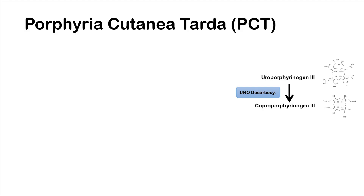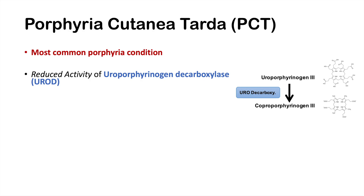Now that we've looked at the entire pathway and the various conditions associated with each of the enzymes, we're going to talk specifically about porphyria cutanea tarda. This is due to a deficiency in uroporphyrinogen decarboxylase, and it is the most common porphyria condition. It is caused by a reduced activity of uroporphyrinogen decarboxylase, which is a hepatic enzyme, and is generally due to an acquired inhibitor.